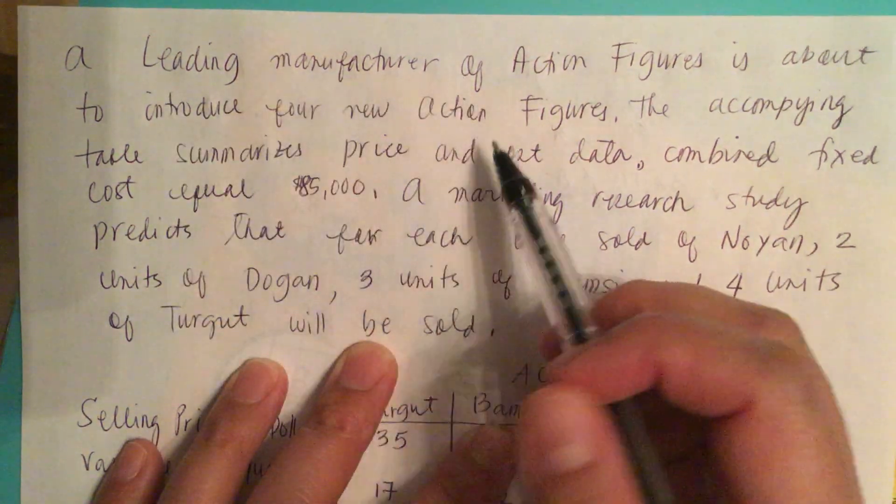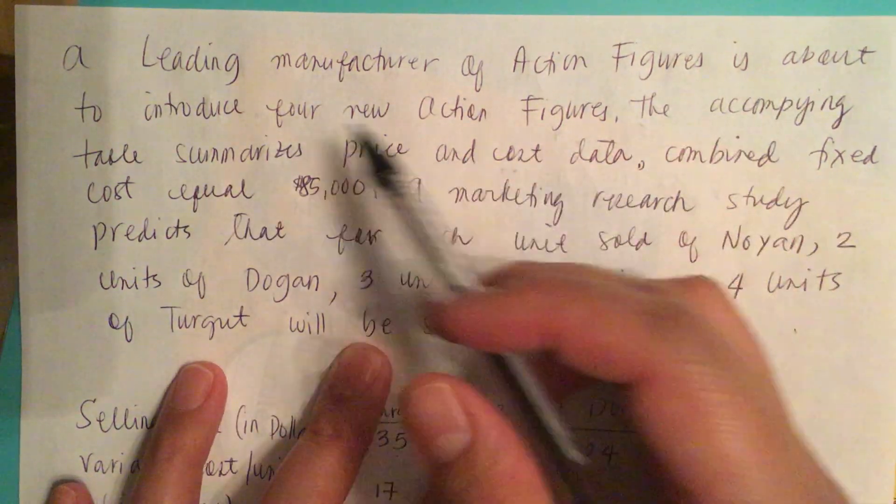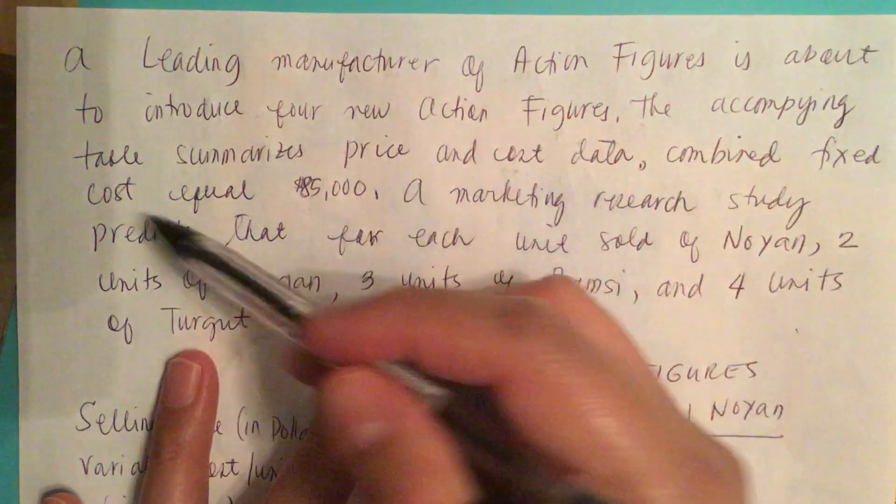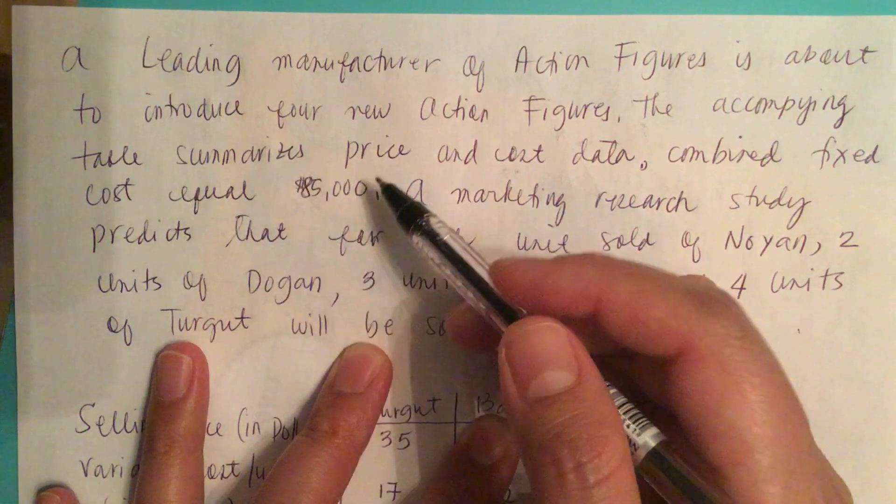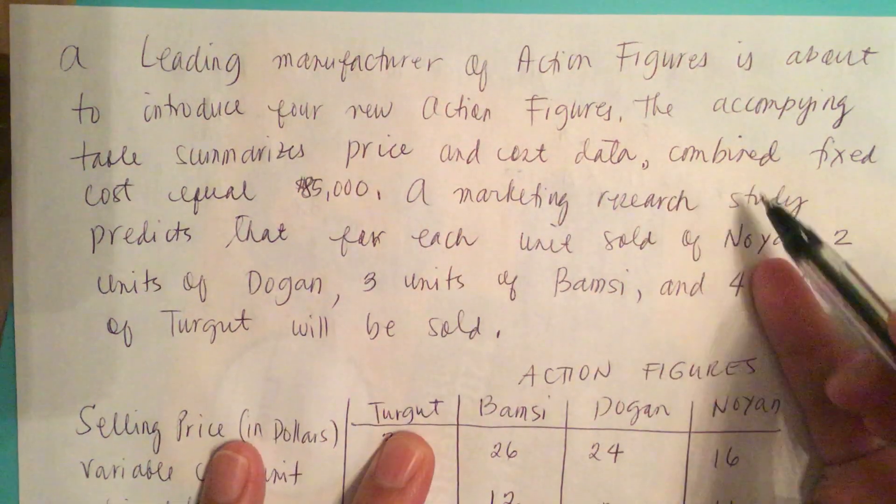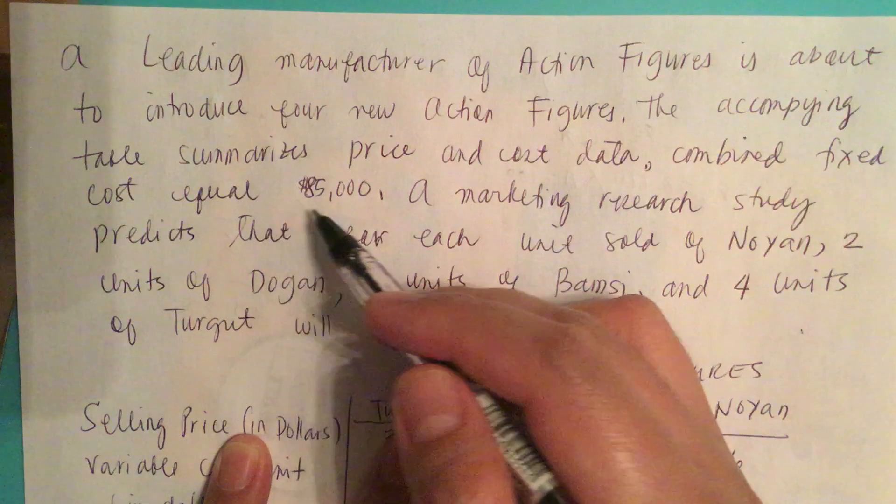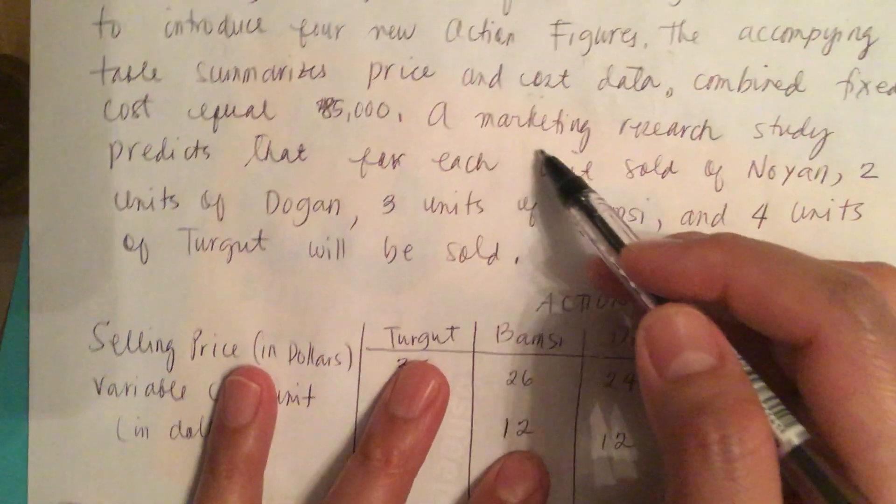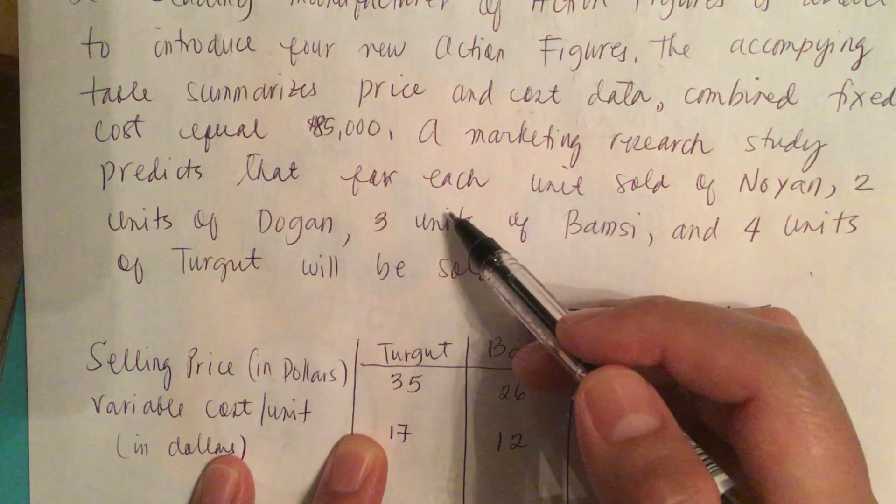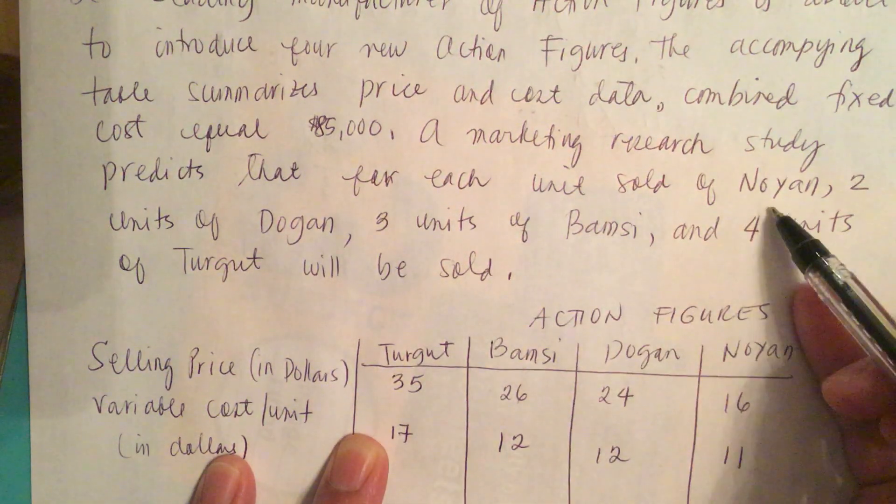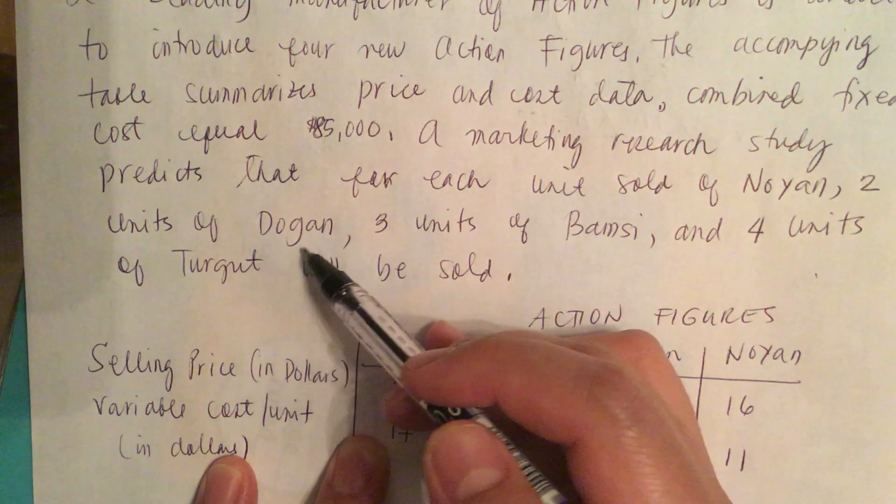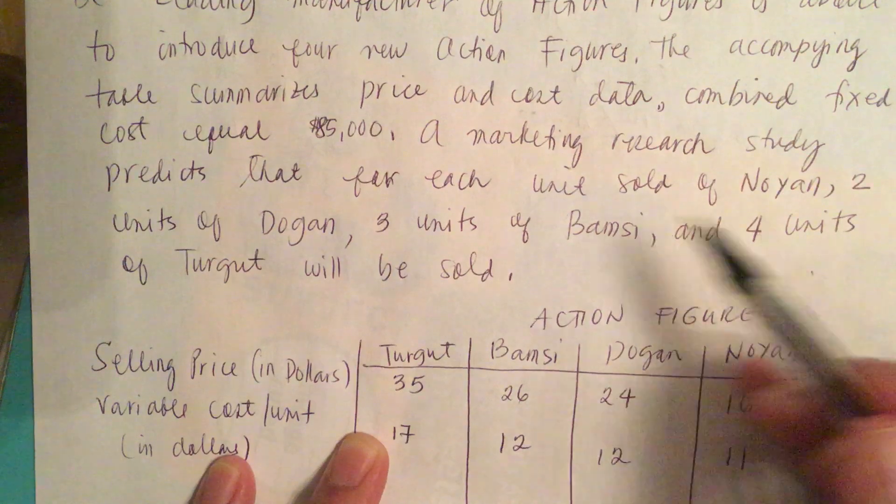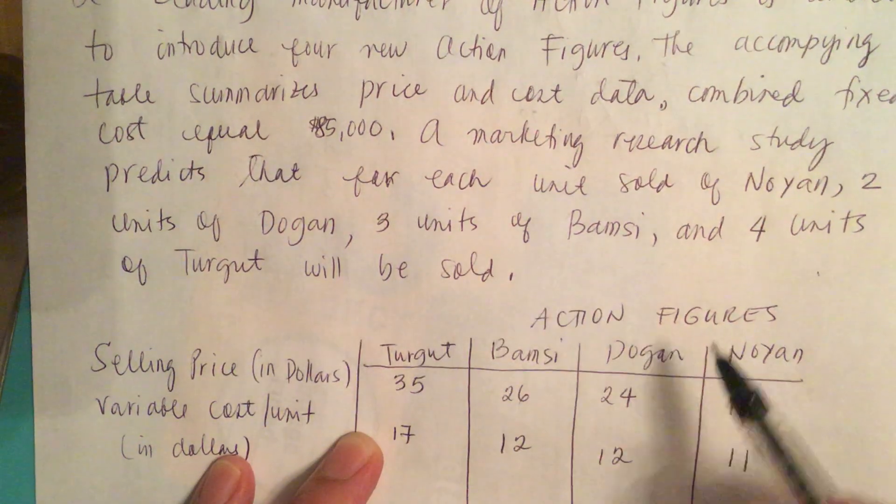A leading manufacturer of action figures is about to introduce four new action figures. The accompanying table summarizes price and cost data. Combined fixed costs equal $85,000. A marketing research study predicts that for each unit sold of Noyan, 2 units of Dogan, 3 units of Bamsi, and 4 units of Turgut will be sold.